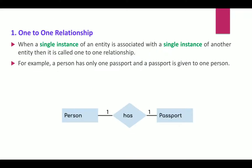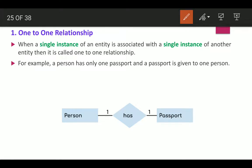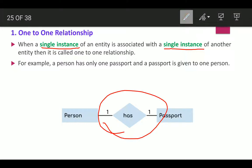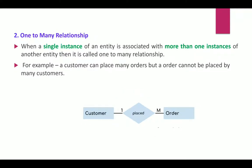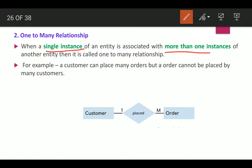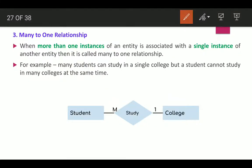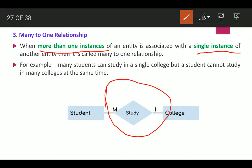In a one-to-one relationship, a single instance of an entity is associated with a single instance of another entity. For example, a person has only one passport and a passport is given to one person. In a one-to-many relationship, a single instance is associated with more than one instance — for example, a customer can place many orders but an order cannot be placed by many customers. In a many-to-one relationship, more than one instance relates to a single instance — for example, many students can study in a single college.